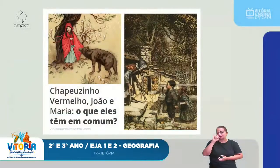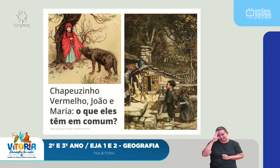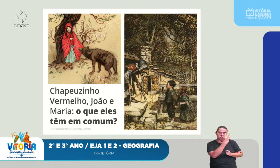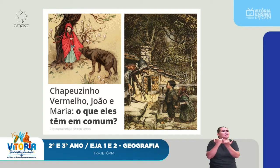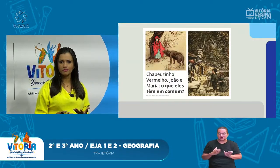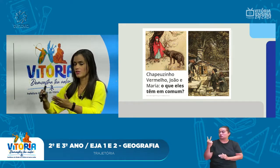Look at these two drawings — childhood stories that everyone here has heard of: João e Maria and Chapeuzinho Vermelho. Everyone here has heard a little about these two classic stories. Chapeuzinho Vermelho is the story of the little girl with the red hood and the big bad wolf. João e Maria went into the forest and found a candy house. What do they have in common? That's right — they each have a path to travel.